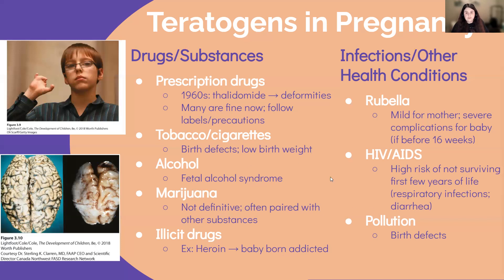In summary, take findings with caution — it can be difficult to isolate the effects of these substances. But it's good to keep substance use to a minimum or avoid it altogether during pregnancy to ensure the best outcomes for the child. Infections are also teratogens. Rubella, for example, causes mild symptoms for the mother but potentially devastating symptoms for the infant, especially if contracted during the first 16 weeks of pregnancy. In that case, half of all children may exhibit a syndrome with congenital heart disease, cataracts, deafness, and severe mental disability. This is less likely if exposure is after 16 weeks.